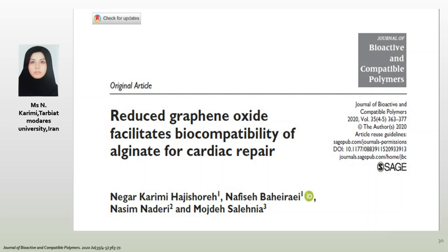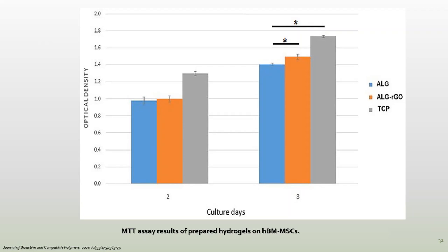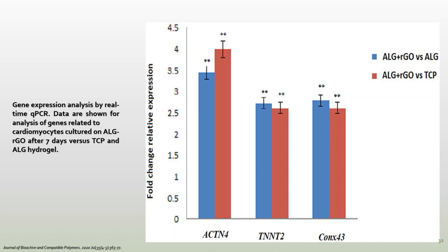In another study in our group, we tried to benefit from the merits of alginate and hypothesized that RGO incorporation within the structure of the hydrogel could improve the cells and improve the cell viability of human bone marrow mesenchymal stem cells. We also confirmed that RGO incorporation could provide a suitable platform for upregulation of cardiomyocyte gene expression even without electrical stimulation.